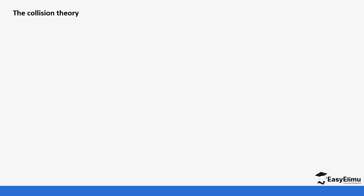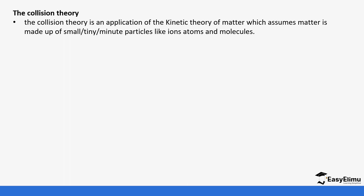Before we start on the rate of reaction in detail, there's something referred to as the collision theory. This is the theory we are going to be using when describing these reactions. The collision theory is an application of the kinetic theory of matter, which assumes that matter is made up of tiny particles, for example atoms and molecules.